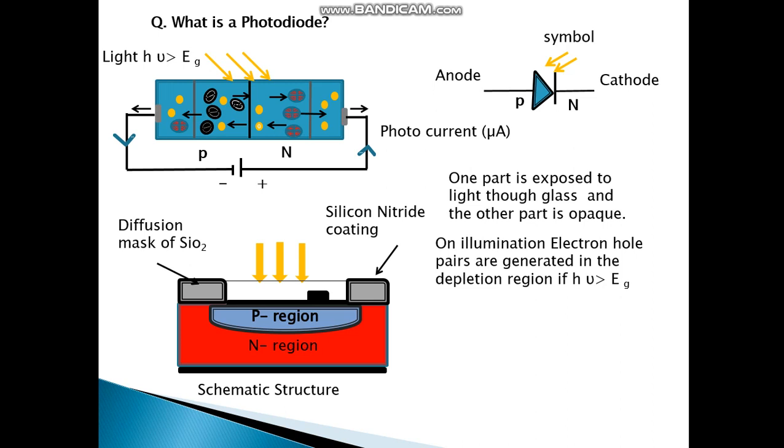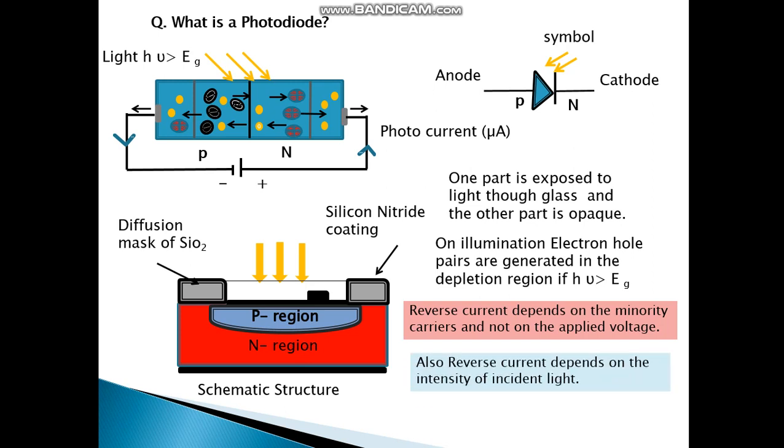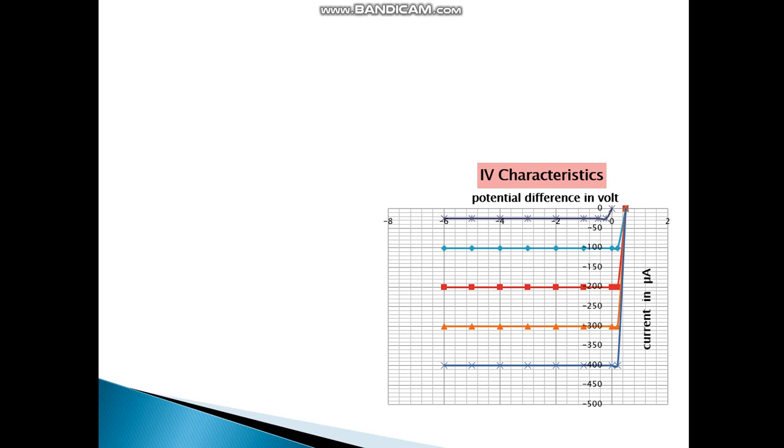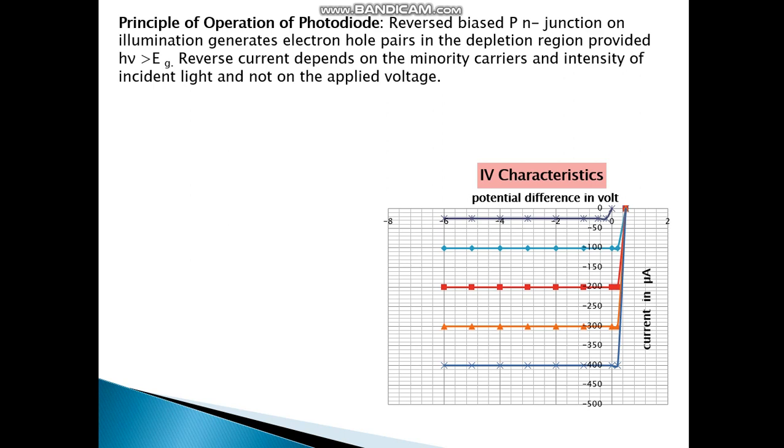On illumination, electron hole pairs are generated in the depletion region, only if h nu is greater than Eg. Reverse current depends on the minority carriers and not on the applied voltage. Also reverse current depends on the intensity of incident light. This is the IV characteristic. Principle of operation of a photodiode: reverse bias p-n junction on illumination generates electron hole pairs in the depletion region provided h nu is greater than Eg. Reverse current depends on the minority carriers and intensity of incident light and not on the applied voltage.